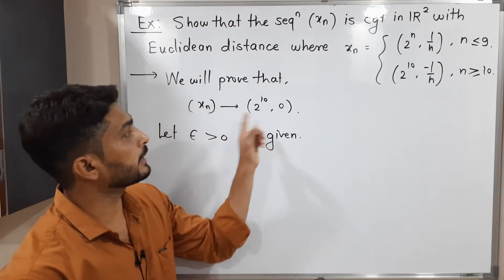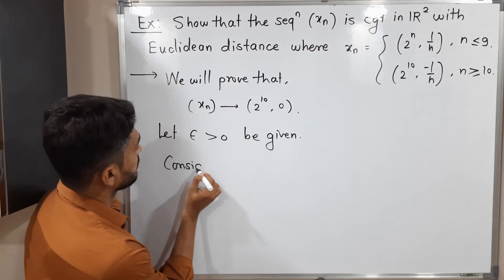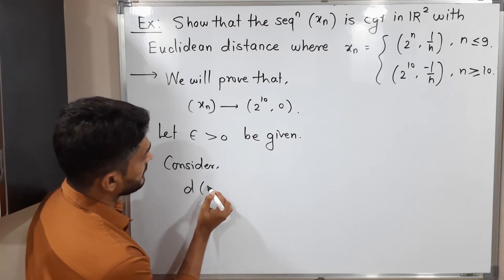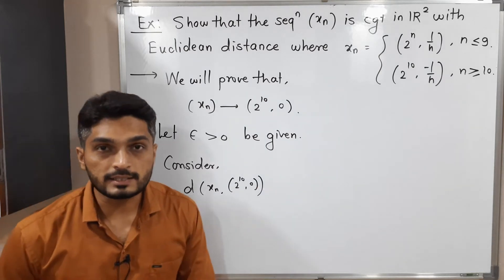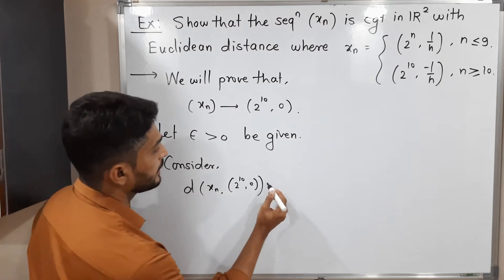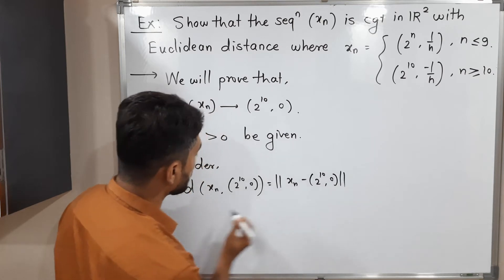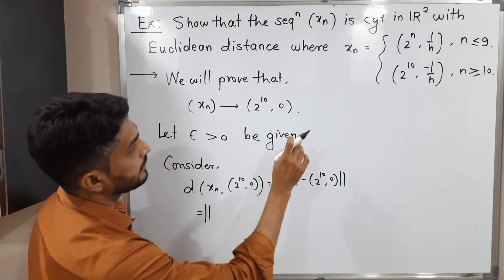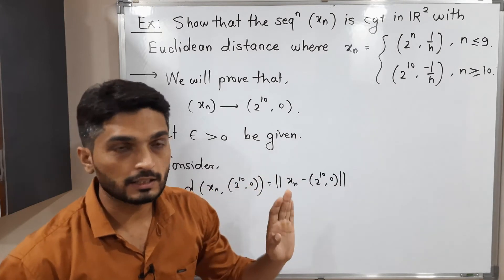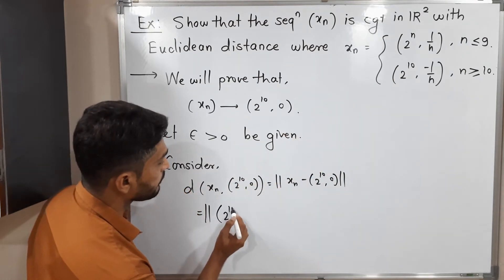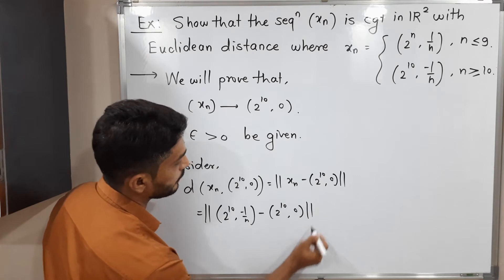We will try to find the distance between Xn and (2 raised to 10, 0). Since we have Euclidean distance, this is equal to the norm of Xn minus (2 raised to 10, 0). We will use the second definition of Xn since it is true for infinitely many n, so we write the norm of (2 raised to 10, minus 1 by n) minus (2 raised to 10, 0).